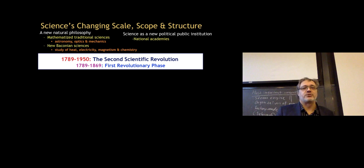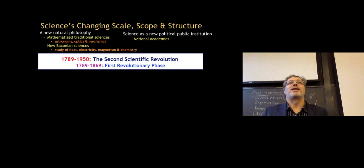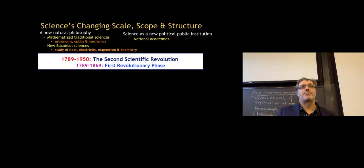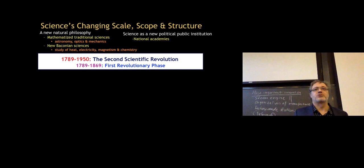Before this period, a new natural philosophy had been developed during the First Scientific Revolution, where they mathematized traditional sciences — astronomy, optics, mechanics — applying mathematics to understand these sciences better. Also, what they describe as the new Baconian sciences — the study of heat, electricity, magnetism, and chemistry — were starting in this period. A third important development was that science became a new political and public institution, seen in the setting up of national academies like the Royal Society in England and the Académie des Sciences in France.